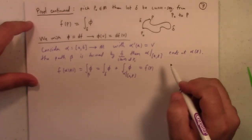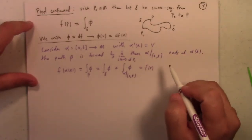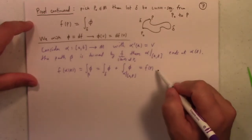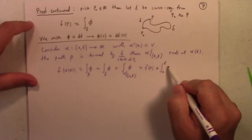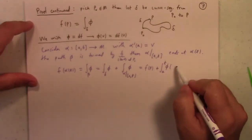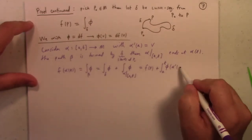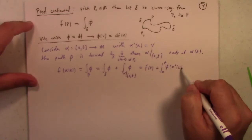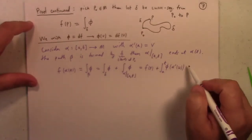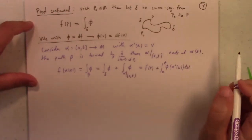And then the second piece, by the definition, actually, of the integral over a one form is the integral from A to T of phi of alpha prime of, well, we could say U, we could say T bar, I guess I'll use, like I said, I'll use U as this better, alpha prime of U to U.